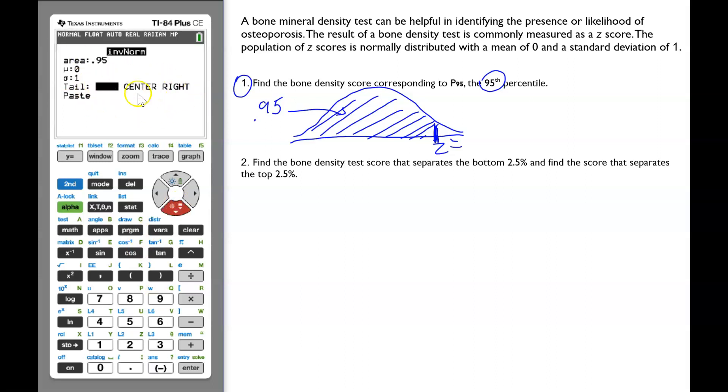Make sure to check the tail. In this case, it's located on the left. Enter. Enter again. The z-score is 1.645.